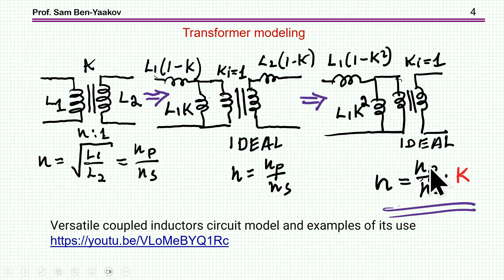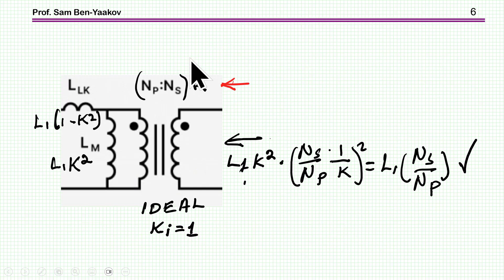Now, the correct one is Np over Ns times k. This is, again, discussed in this video. While here, we don't have this k.